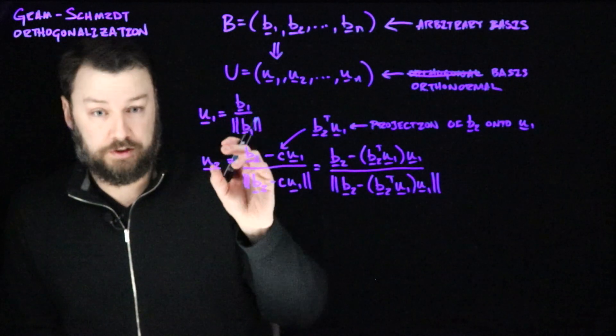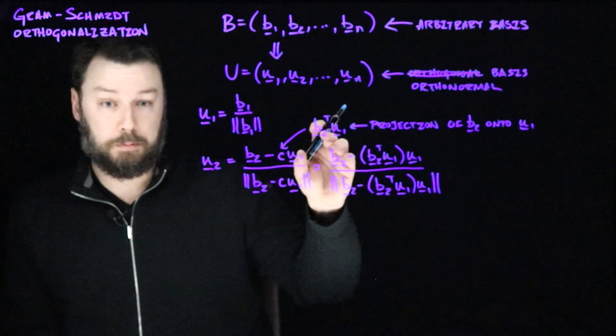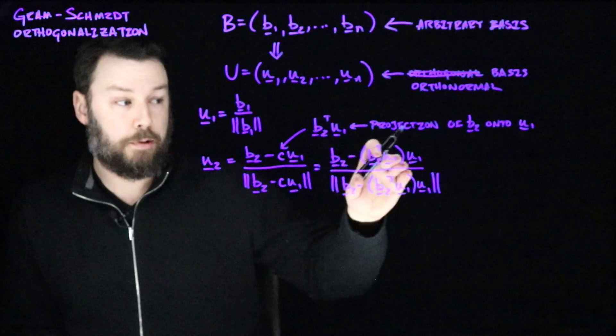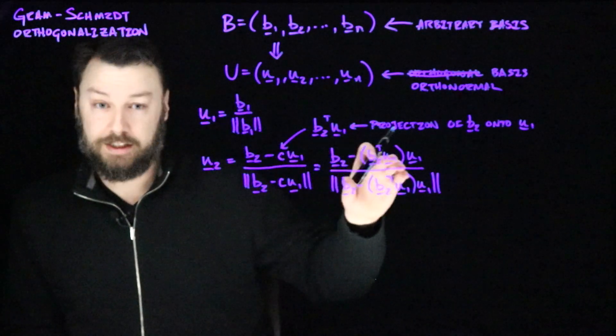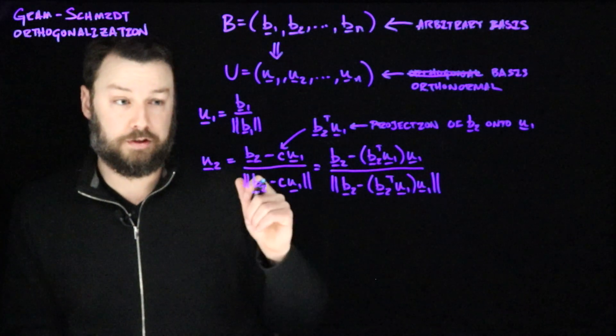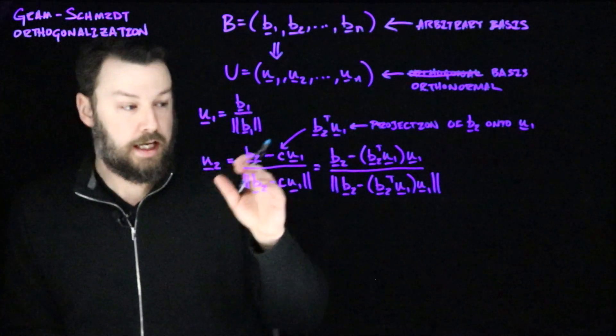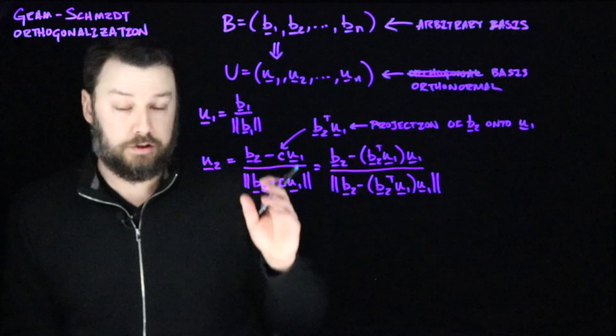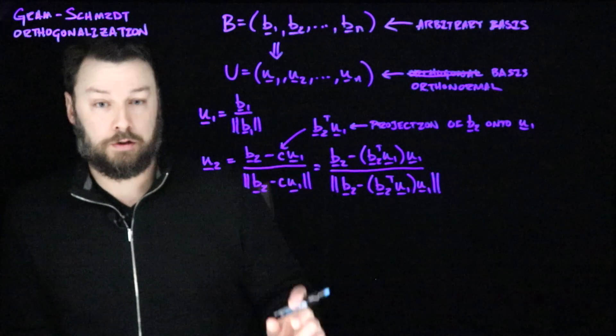So we generate our second basis vector by taking b2, subtracting any part of it that looks like u1, subtracting any of that out, and then dividing it by its length. So it's perpendicular now to u1, and it is also unit length. So now we have two parts of our orthogonal basis.